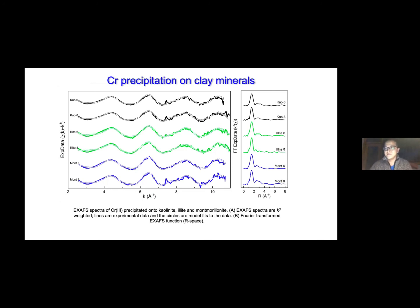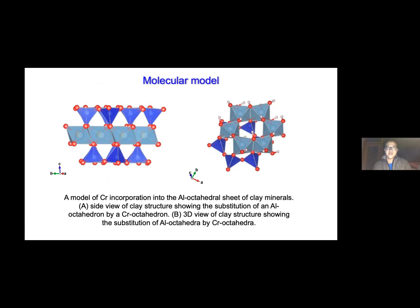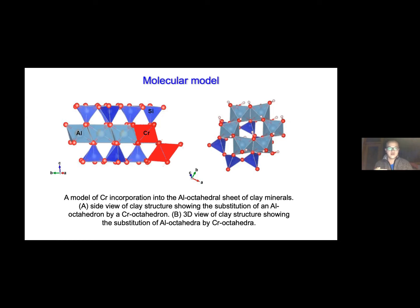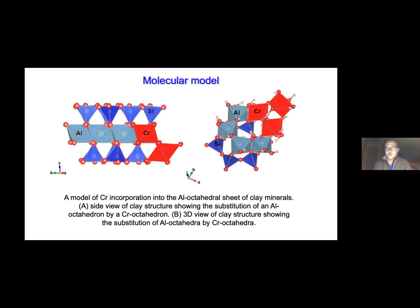We developed molecular models to interpret the spectra. For a three-layer clay with silicon tetrahedral on top, aluminum octahedral in the middle, and another silicon tetrahedral at the bottom — when chromium is precipitated on the clay surface, we find the chromium atom replaces aluminum in the octahedral layer. Looking from another angle, two chromium atoms replace two aluminum atoms on the octahedral layer, and a third chromium atom connects with the other two through bidentate binuclear bonding. This type of bonding environment is very stable — the bond strength is way stronger than inner sphere or outer sphere complexation.